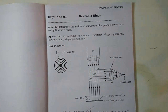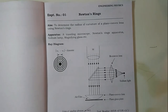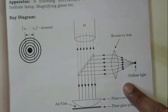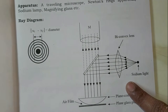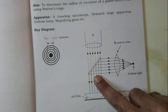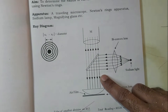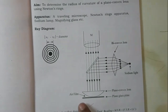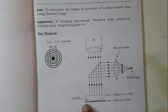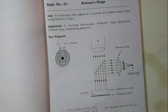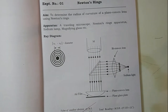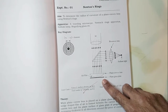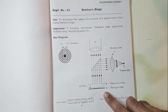Now we will quickly understand the theory behind this experiment. The monochromatic light source is a sodium vapor lamp. The bi-convex lens is used to obtain a parallel beam of light. The semi-silvered glass plate is placed at 45 degrees to the incident beam for normal incidence. When a plano-convex lens of large focal length is placed on a plain glass plate, an air film of varying thickness will develop between the curved surface of the lens and the plain glass plate.